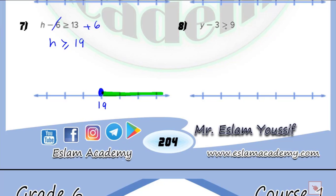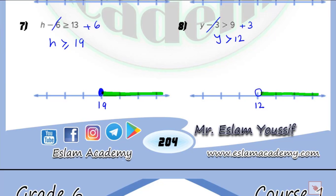Next, y minus 3 more than 9. Because it is minus, I will use the inverse operation, which is addition. So y is now more than 9 plus 3, which equals 12. We have 12. More than means an open circle, and we shade the part which lies at the right.